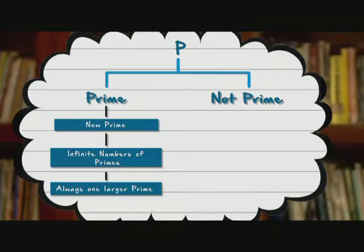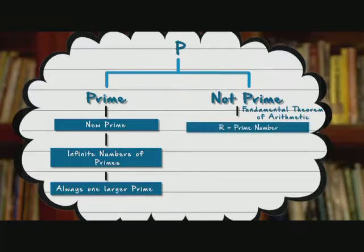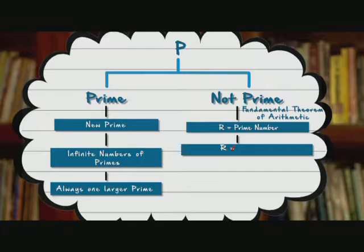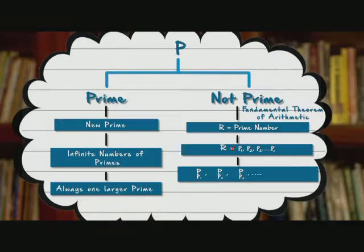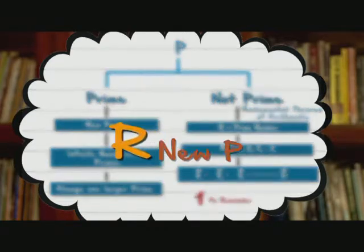However, if P is not a prime, it must be divisible by a prime number according to the fundamental theorem of arithmetic that we just saw. Let's call that number R. Now R can't be any of the numbers P1, P2, all the way to Pn from our original list, because if you divide them by P, you will get a remainder 1, which means P is not divisible by any of these prime numbers. So R is a new prime.